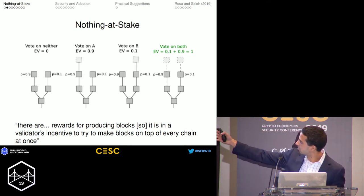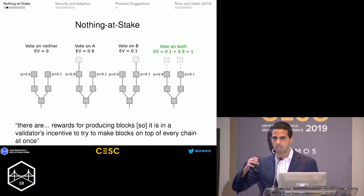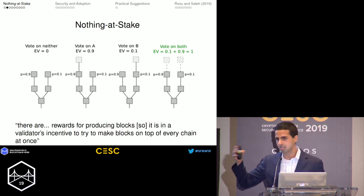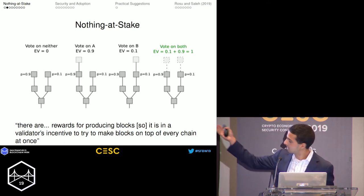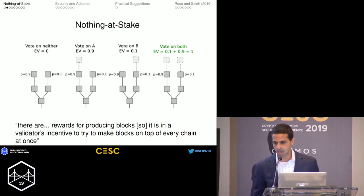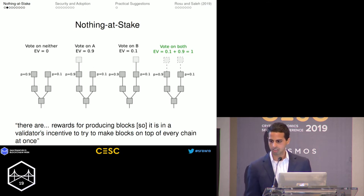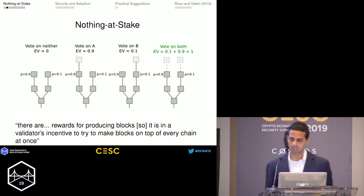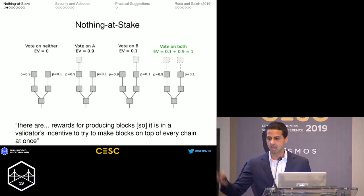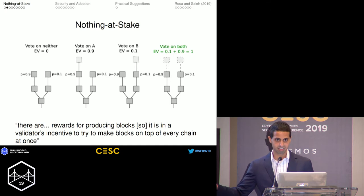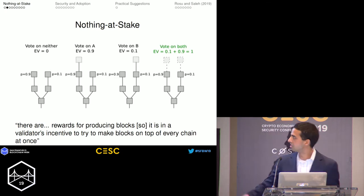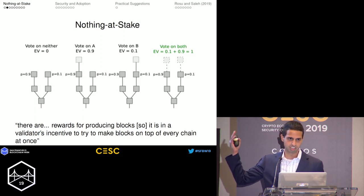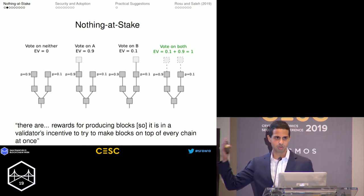On the far left, there's the case where you choose not to update anything. On the far right, there's the case that you vote for both. In the middle is one or the other. As the website says, there are rewards for producing blocks, so it's in a validator's incentive to try to make blocks on top of every chain at once. If the reward is normalized to one unit: if you don't vote for either chain you get nothing; if you vote for both you get one; if you vote for one chain you get one times the probability that chain ends up being the true chain. So the disagreement is perpetual because you always want to update both ledgers.